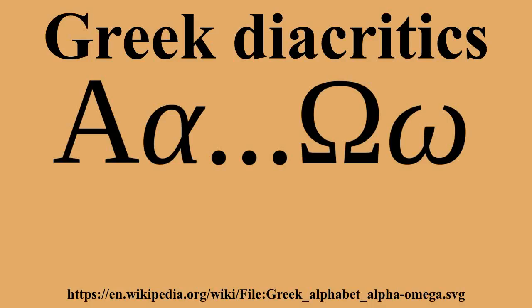The diacritics are written above lowercase letters and at the upper left of capital letters. In the case of a diphthong or digraph, the second vowel takes the diacritics. A breathing diacritic is written to the left of an acute or grave accent, but below a circumflex. Accents are written above a dieresis or between its two dots. When a word is written entirely in capital letters, diacritics are far less used. The word η is an exception because of the need to distinguish it from the nominative feminine article η.